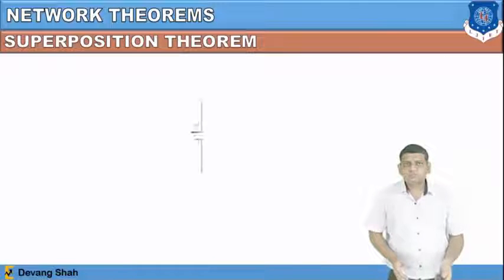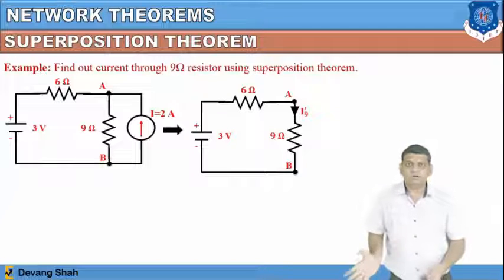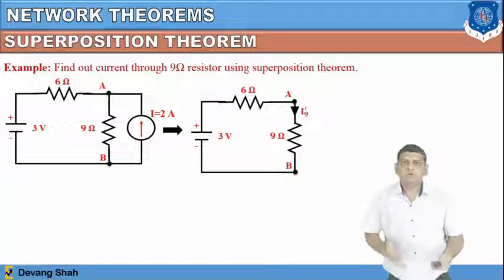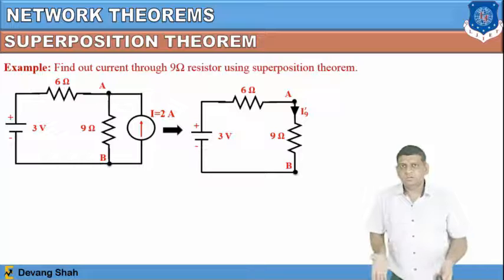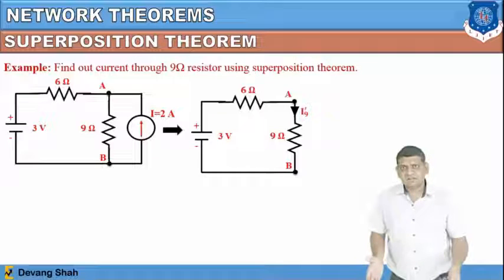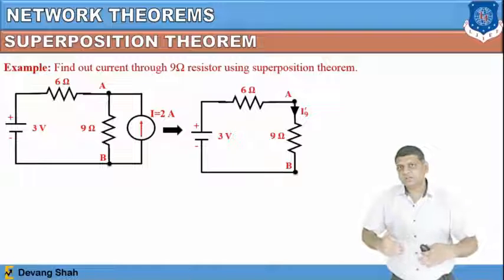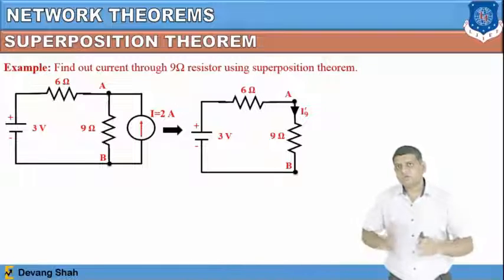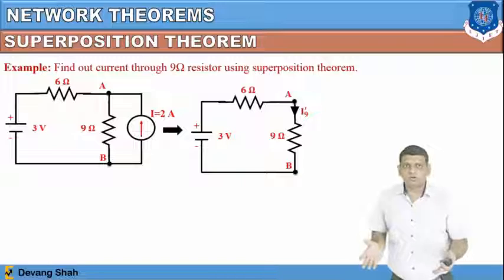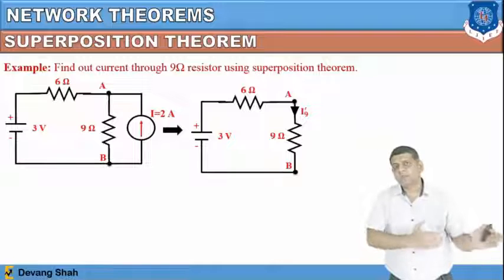Here is an example with two sources: one voltage source and one current source, with two resistances connected. The job is to find the voltage drop across the 9 ohm resistance or the current passing through it. To find the separate effects of the voltage source and current source, we take one at a time. First, consider the voltage source E1 — make the current source zero, meaning open the current source.